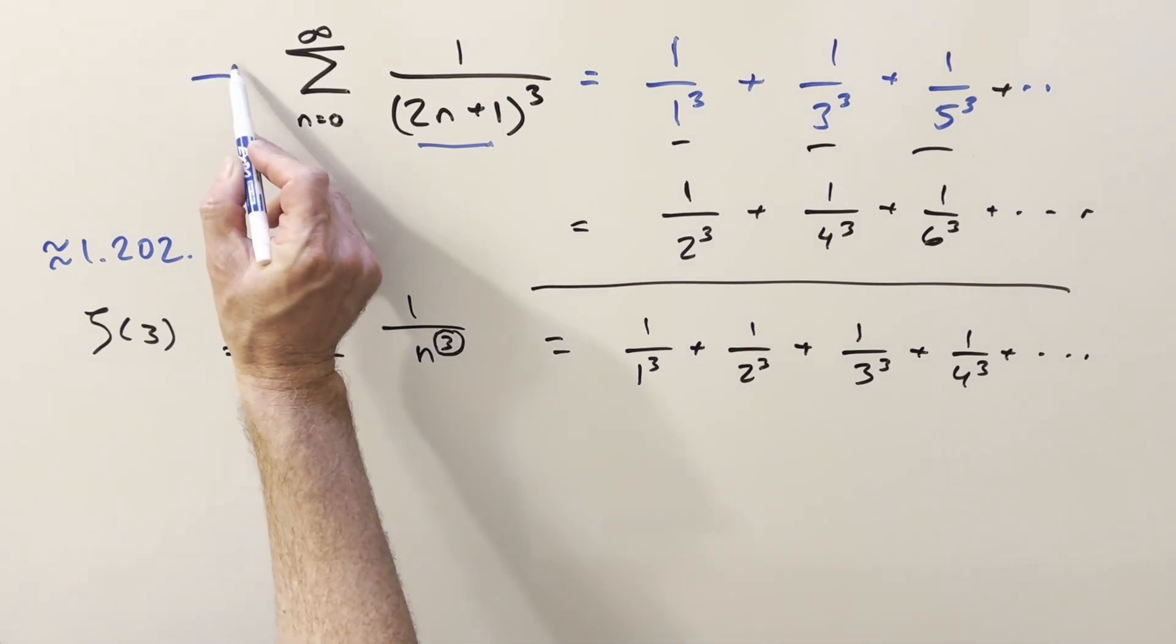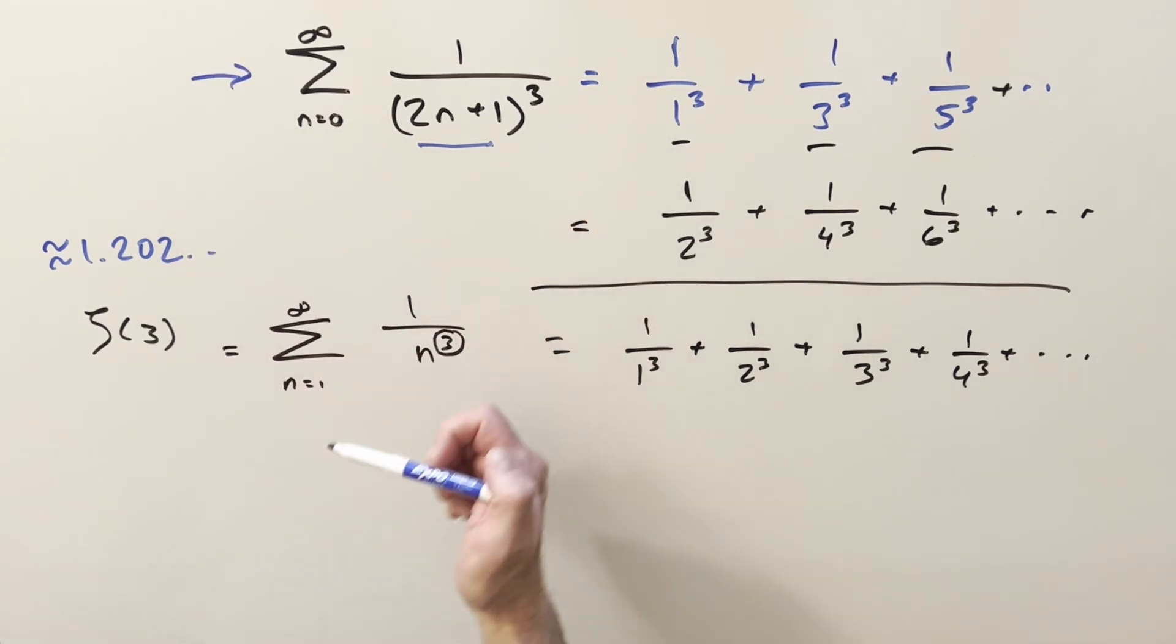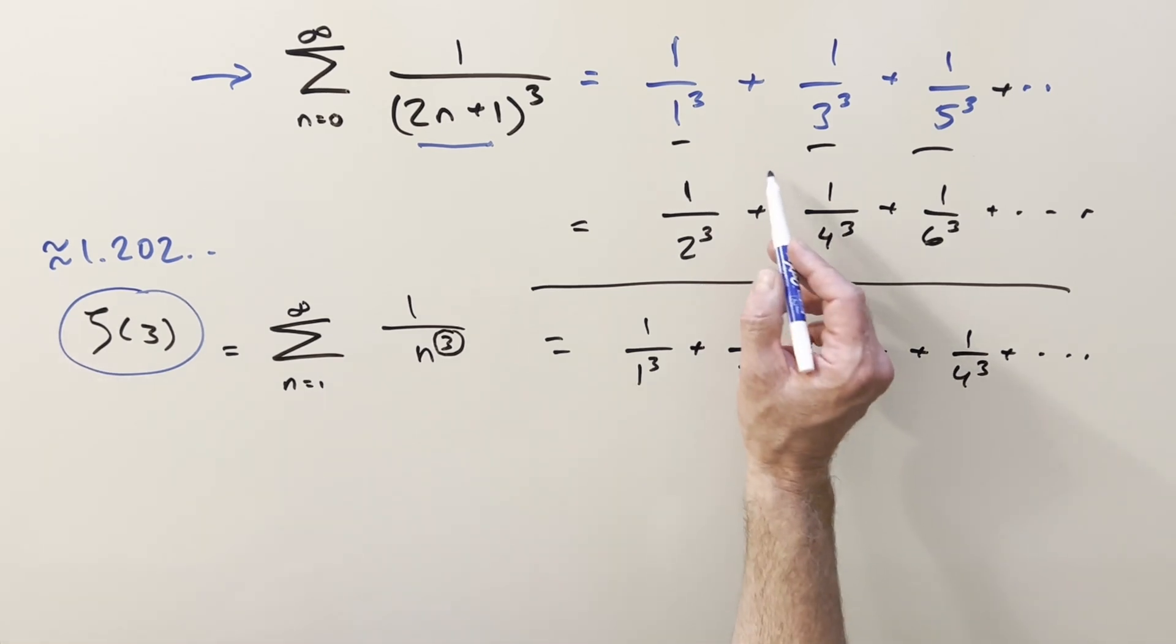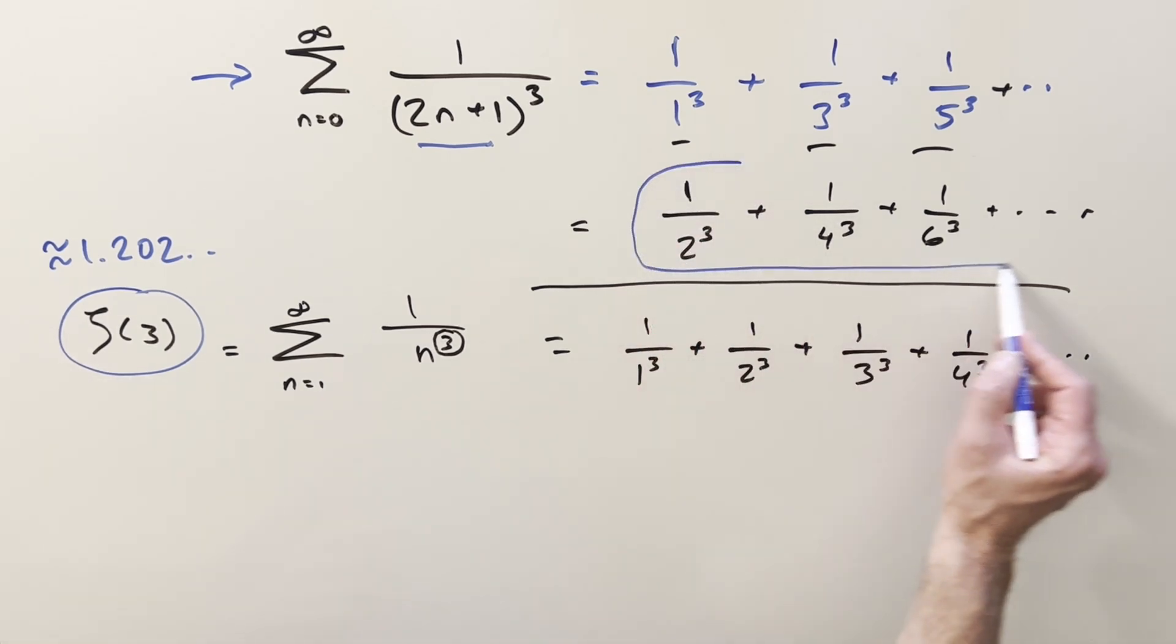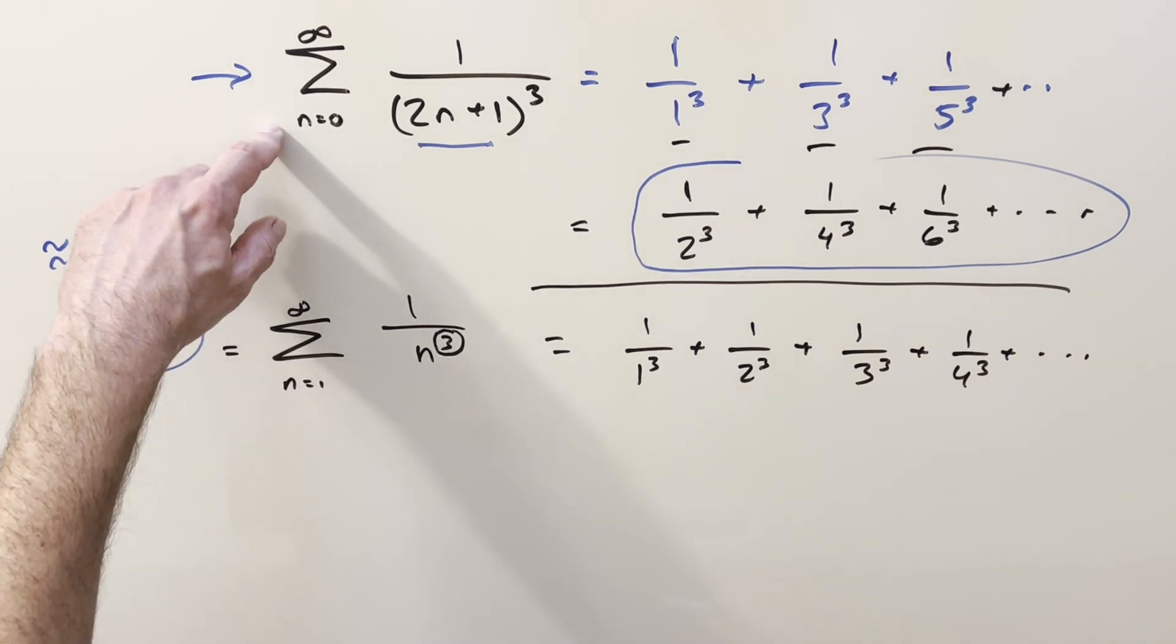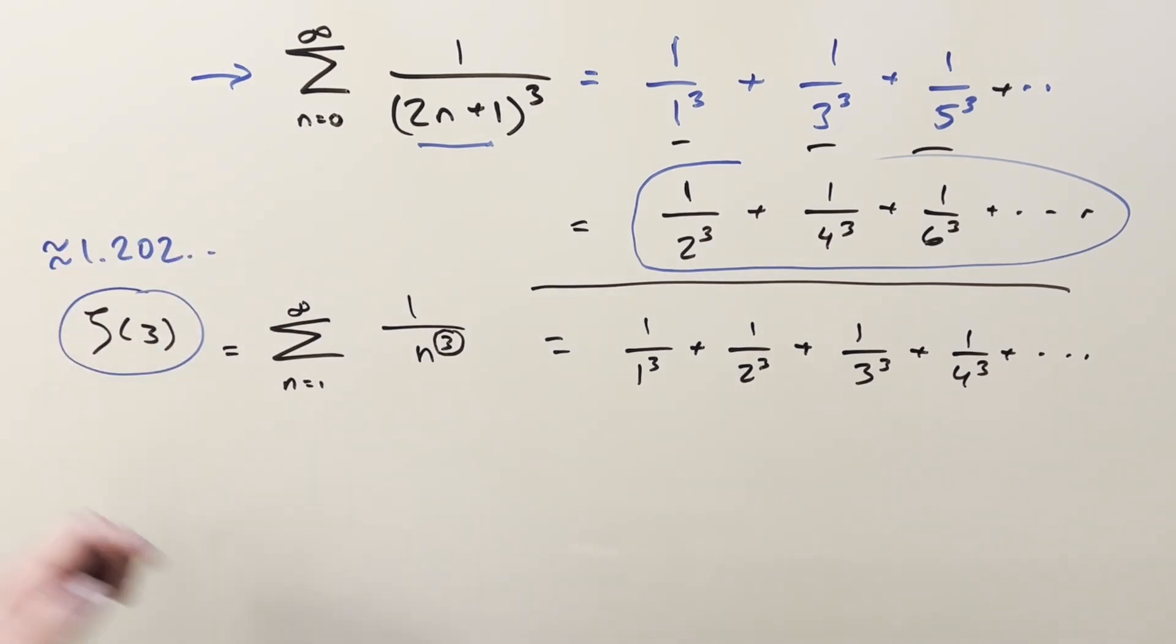To get back to our solution of all the odd terms, if we can find a value for all the even terms, then we can set up an equation and solve for our answer in terms of the Riemann zeta function.